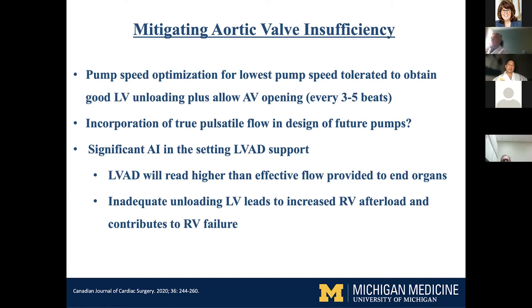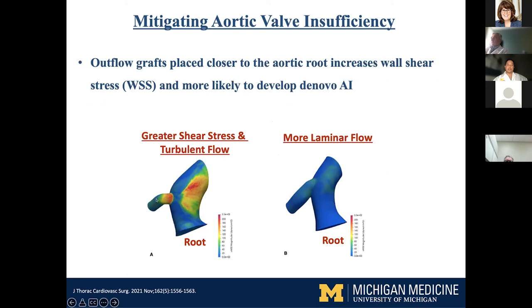What you see on the VAD when you have significant AI is that you'll read higher flows than the patient's clinical condition suggests — they're inadequately supported in terms of end-organ perfusion, but the LVAD is reading a good flow. The inability to offload the LV can lead to increased RV afterload and contribute to RV failure. Computer modeling also shows that if the outflow graft is aimed low, it shoots into the aortic wall causing turbulence at the root, which can promote AI development. Whereas pointing the LVAD a little higher, directing momentum toward the arch, produces more laminar flow and less turbulence at the root.